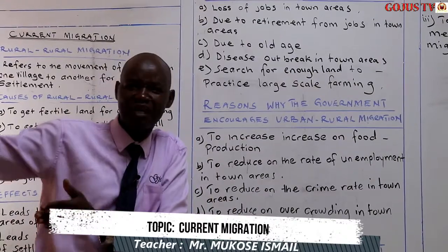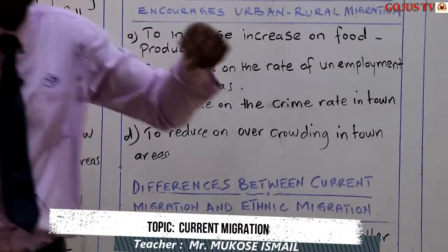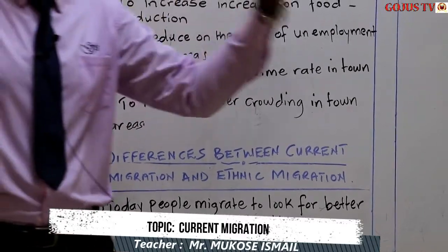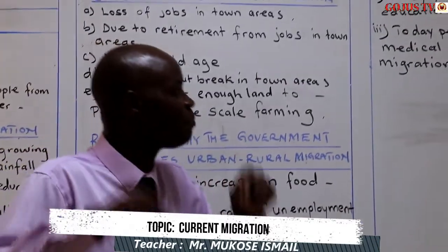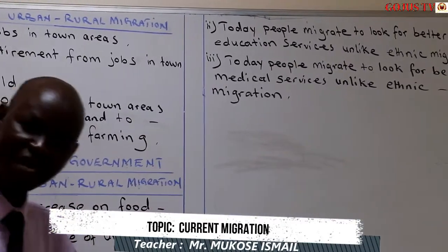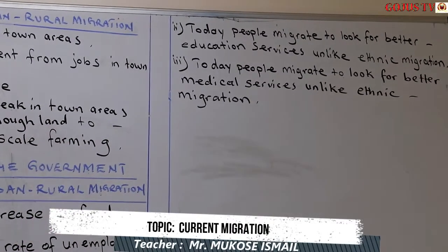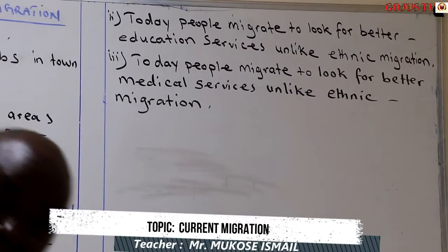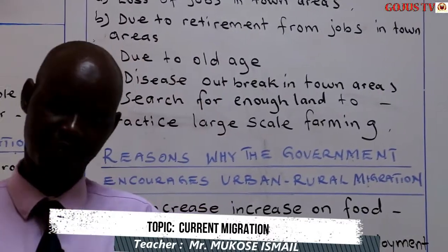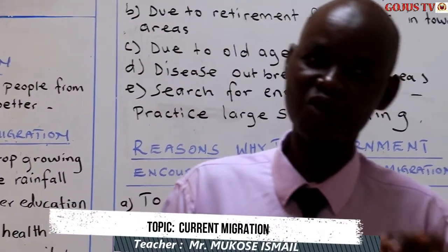As we wrap up this session, we need to know the difference between early migration and current migration. With current migration today, people migrate to look for better jobs, unlike early ethnic migration. Today people migrate to look for better education services and better medical services, unlike the early ethnic groups.